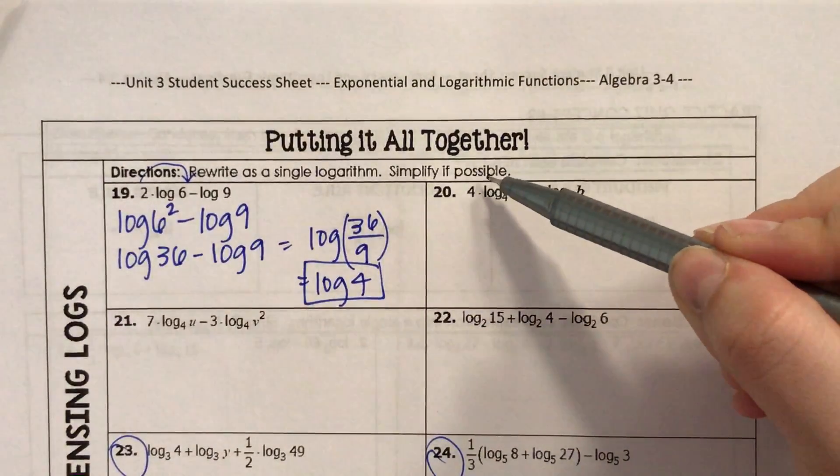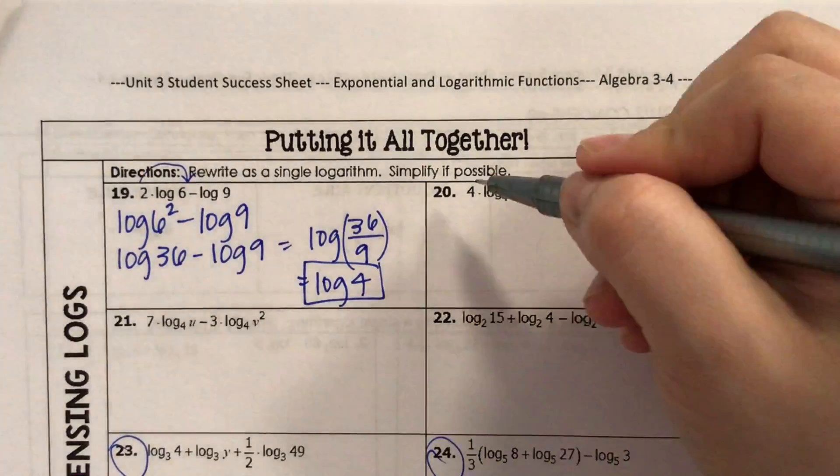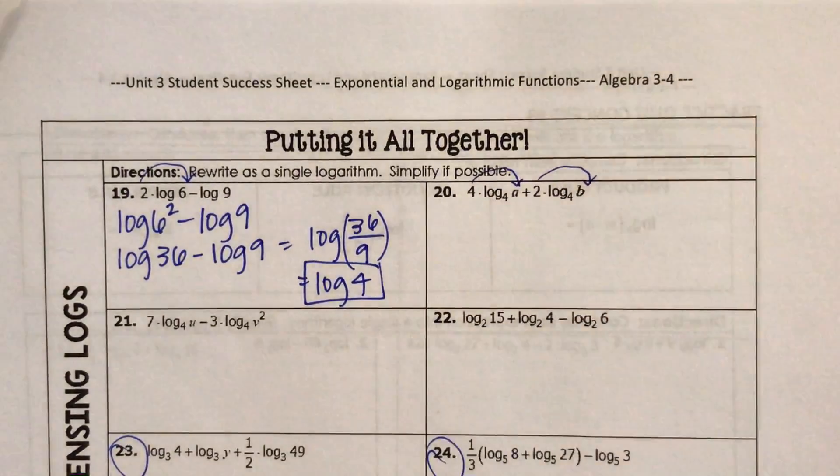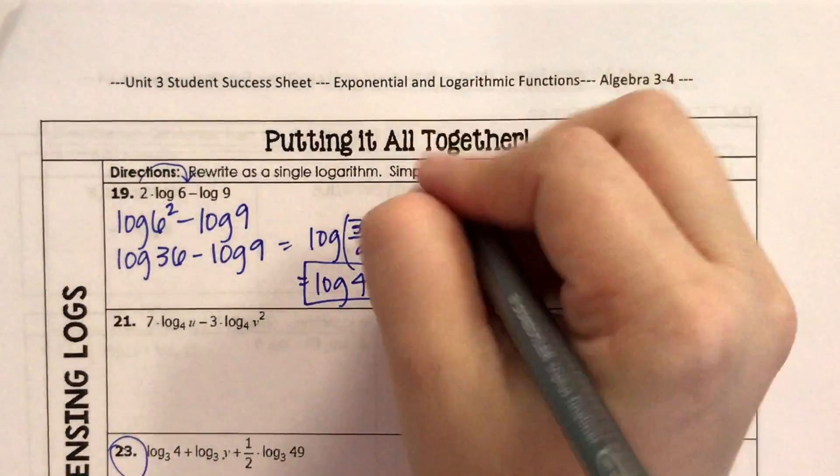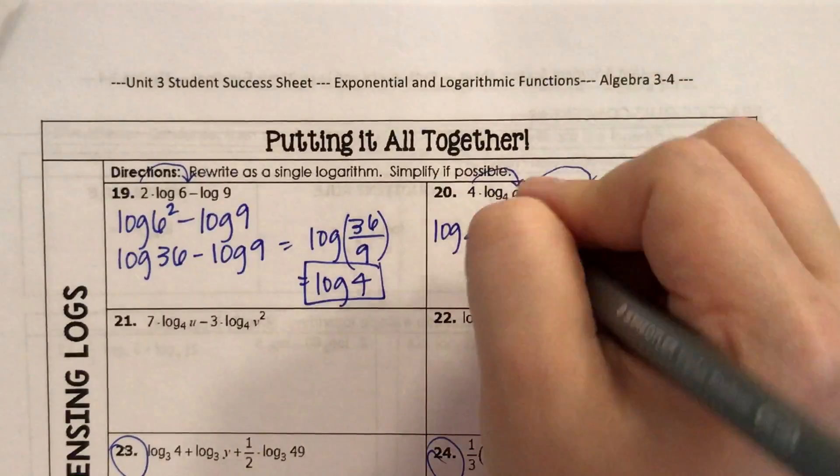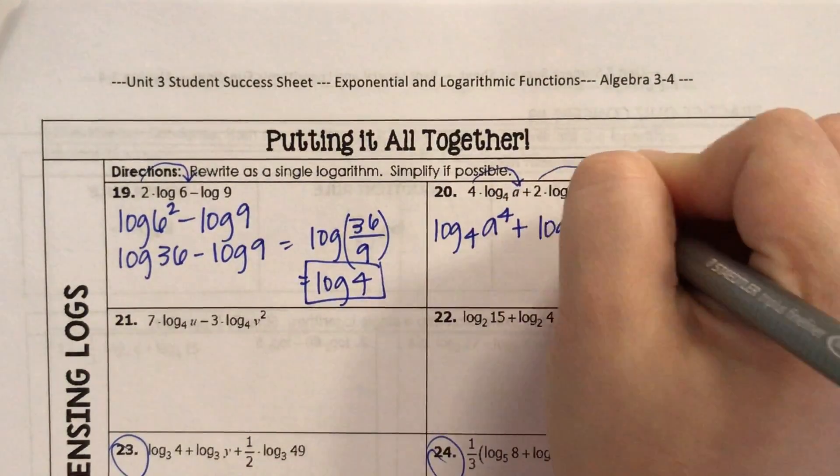Number 20: 4 times log base 4 of A plus 2 times log base 4 of B. Remember, these numbers, if they're out front, I can just change them to exponents. So this is now log base 4 of A to the fourth power plus log base 4 of B to the second power.